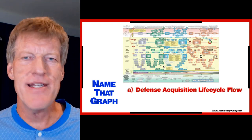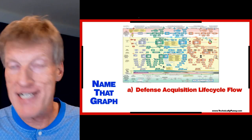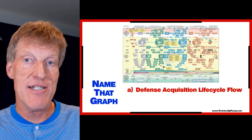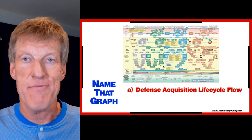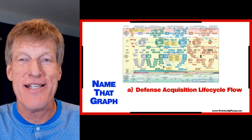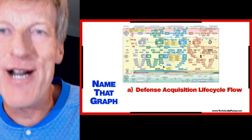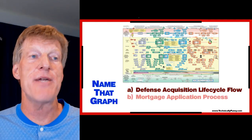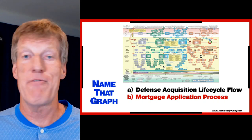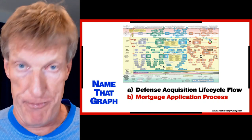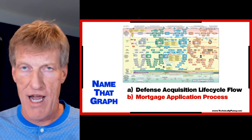And then finally, this will be the last one. This is a classic super busy chart. People love to put up these super busy charts. This is an actual chart — U.S. Department of Defense acquisition lifecycle flow. No wonder this government doesn't work. Look at these flow charts that people made. It's a mess. But what else could this chart be? This could be the mortgage application process. I don't know if you've applied for a mortgage lately, but it has got super complicated. It is way too — used to be complicated, now it's out of this world complicated.